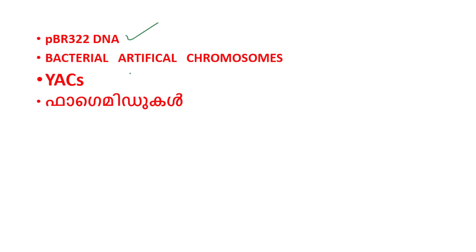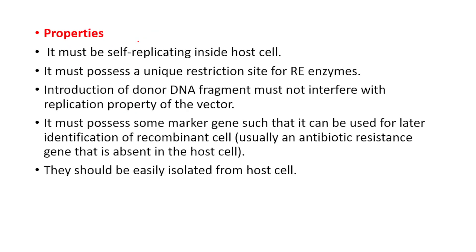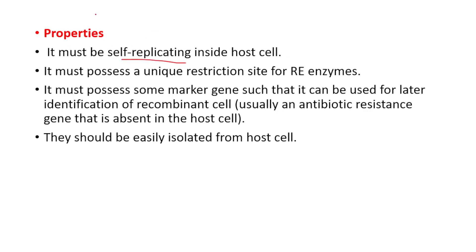Examples include PBR322 DNA, bacterial artificial chromosomes, yeast artificial chromosomes, and phage-mediated vectors. If we have a self-replicating property, it should have a unique restriction site for restriction enzymes.